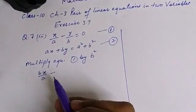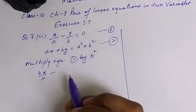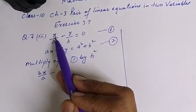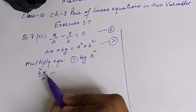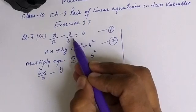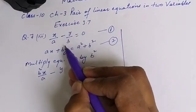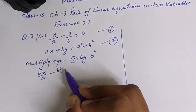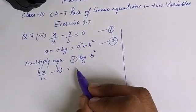So I have written here multiply equation 1 by b square. So we will multiply this by b square. It becomes b square over a x minus y, and we will multiply this by b square. 1b will be cancelled with 1b, so it becomes yb or by you can say, is equal to 0 into b square is 0.